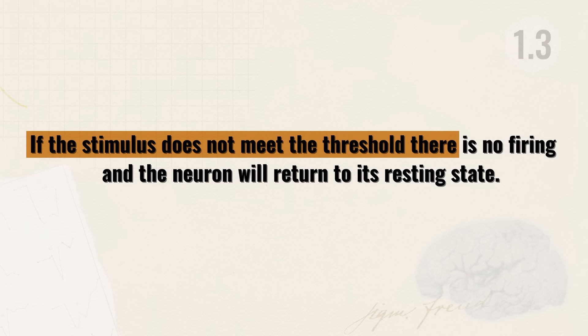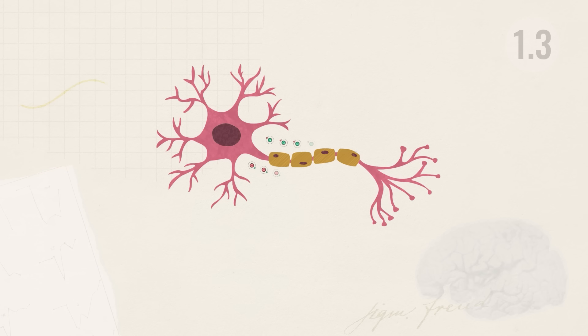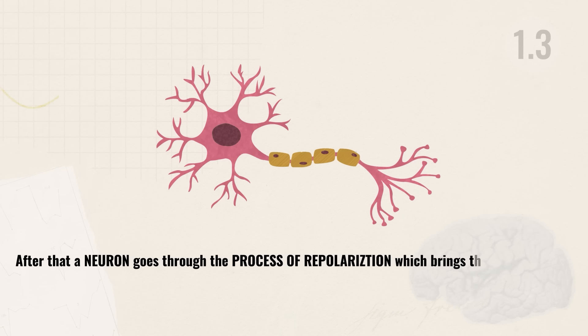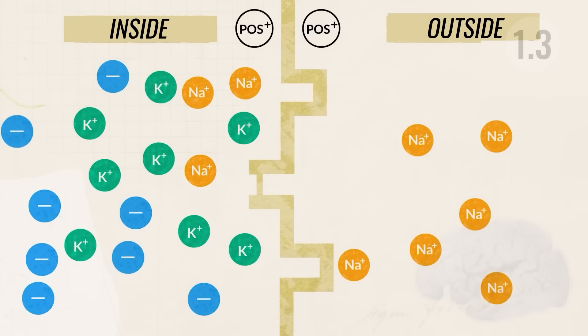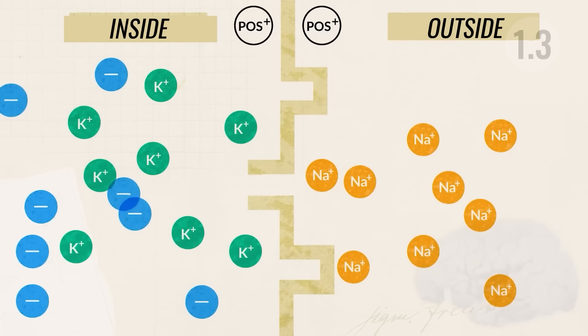If the stimulus does not meet the threshold, there is no firing and the neuron returns to its resting state. When an action potential occurs, it sends a signal down the axon to other neurons. After that, a neuron goes through repolarization, which brings it back to resting potential. During this process, channels open to let positive ions back outside the cell membrane. When this is happening, the neuron cannot respond to any other stimulus — this is known as the refractory period, when the cell cannot fire until repolarization is complete.